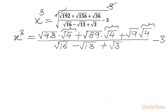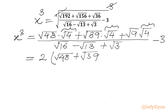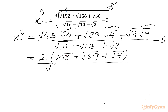Root 4 is 2, so I will write 2 times root 48 plus root 39 plus root 9. In the denominator we will write root 16 minus root 13 plus root 3, minus 3.